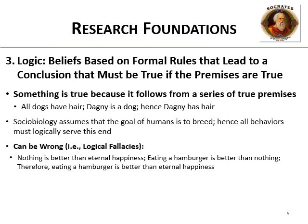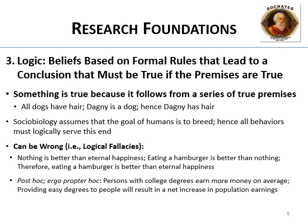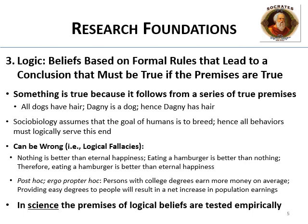Obviously that's wrong. What's the fallacy? It's a double meaning of the word 'nothing.' The post hoc ergo propter hoc is another fallacy — after the fact, therefore because of the fact. For example: persons with college degrees earn more money on average, so we should just provide free degrees to everyone and everyone's going to be rich. In science, the premises of logical beliefs themselves are tested empirically — we physically collect information to test those premises. We don't just assume premises are true.